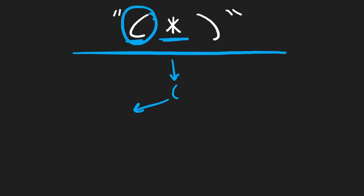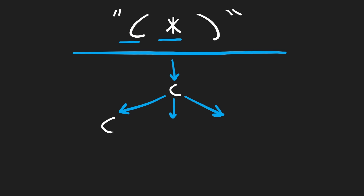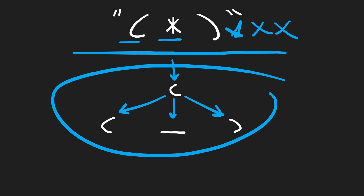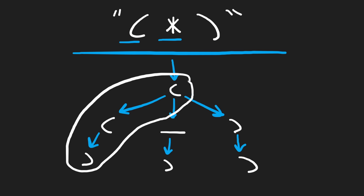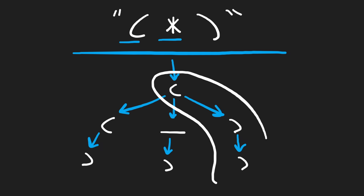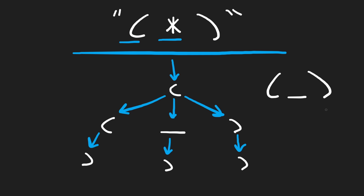We don't need to branch when we get to a regular parentheses because that's already determined. For the wildcard, it could be another left parentheses, a space, or a right parentheses. Then we get to the third character — it's already determined it's a right parentheses, but we have to process it for all three of our branches. You can see if we had a lot of wildcards, this decision tree would get very big. So among all three combinations: the branch with two left and one right is invalid, the one with one left and two rights is also invalid, but the middle one — left, space, right — is valid.